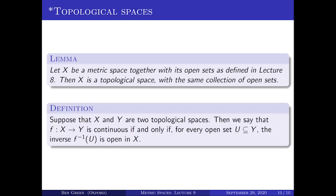Now that we've characterised what a continuous function is purely in terms of open sets, we can extend the definition of continuous function to topological spaces. Suppose X and Y are two topological spaces. Then a map f from X to Y is continuous if and only if for every open set U in Y, the inverse image f⁻¹(U) is open in X. In a topological space there's no notion of distance, and yet it's still possible to formulate what a continuous function is without reference to any distance. This no longer comes with the intuition of taking nearby points to nearby points, but that's the reason behind recasting the definition of continuous function in terms of open sets. You'll hear much more about topological spaces in the designated topology course.